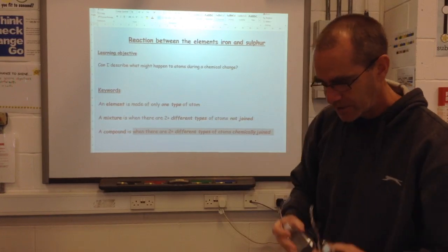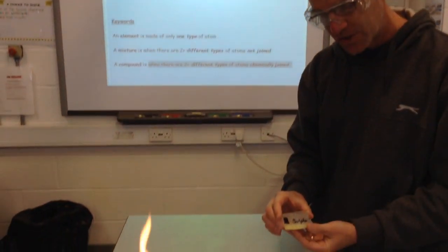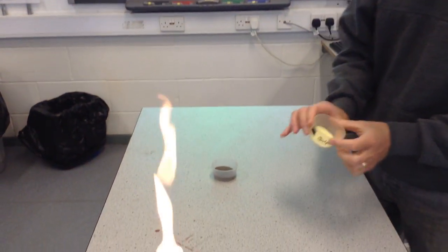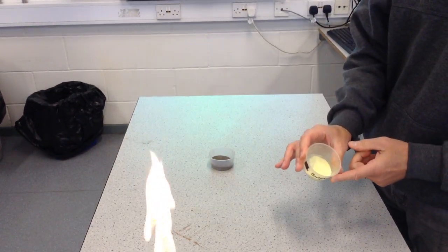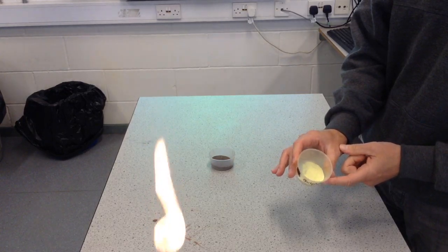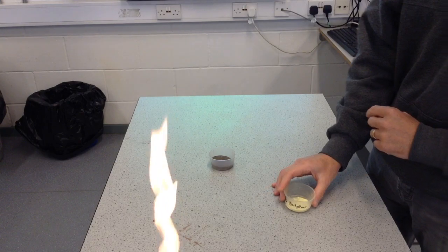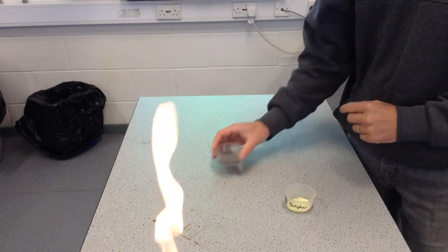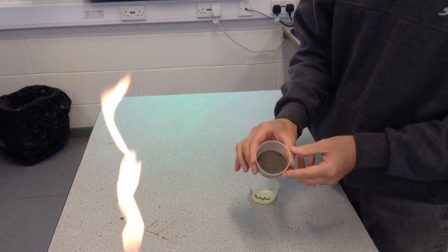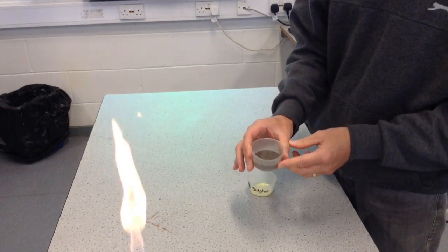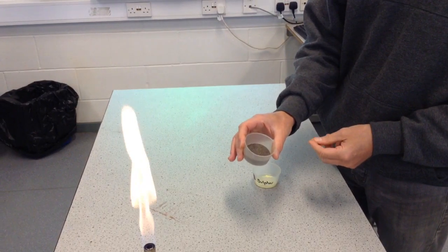So, to the experiment — I'm going to be definitely wearing my goggles for this one. Sulphur is an element, and it's rather a beautiful one actually — a lovely pale yellow colour, only made of sulphur atoms. And iron is a metal, kind of shiny grey in colour, but again it's only made of iron atoms.